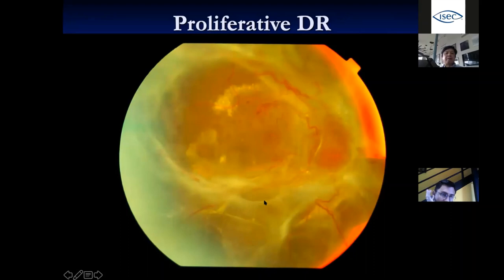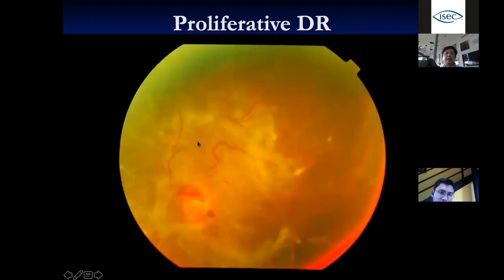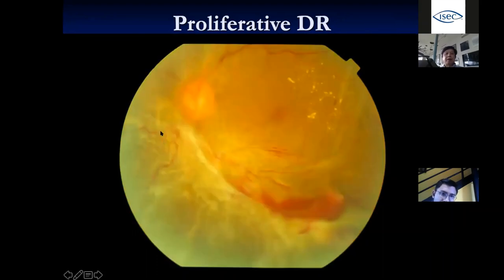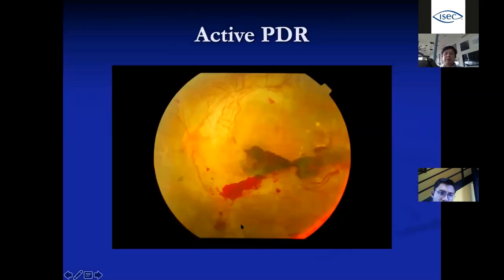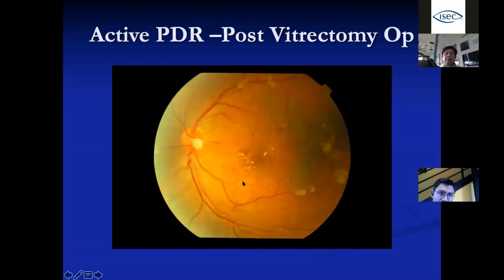In advanced proliferative DR, blood can break through into the vitreous — called vitreous hemorrhage — causing sudden severe vision loss. If neglected, scar tissue forms alongside the abnormal blood vessels, contracts, and pulls off the retina — this is tractional retinal detachment, causing even more severe vision loss and distortion. Patients with very active proliferative DR may need surgery, and after surgery we can restore anatomy with vision returning close to normal if done timely.